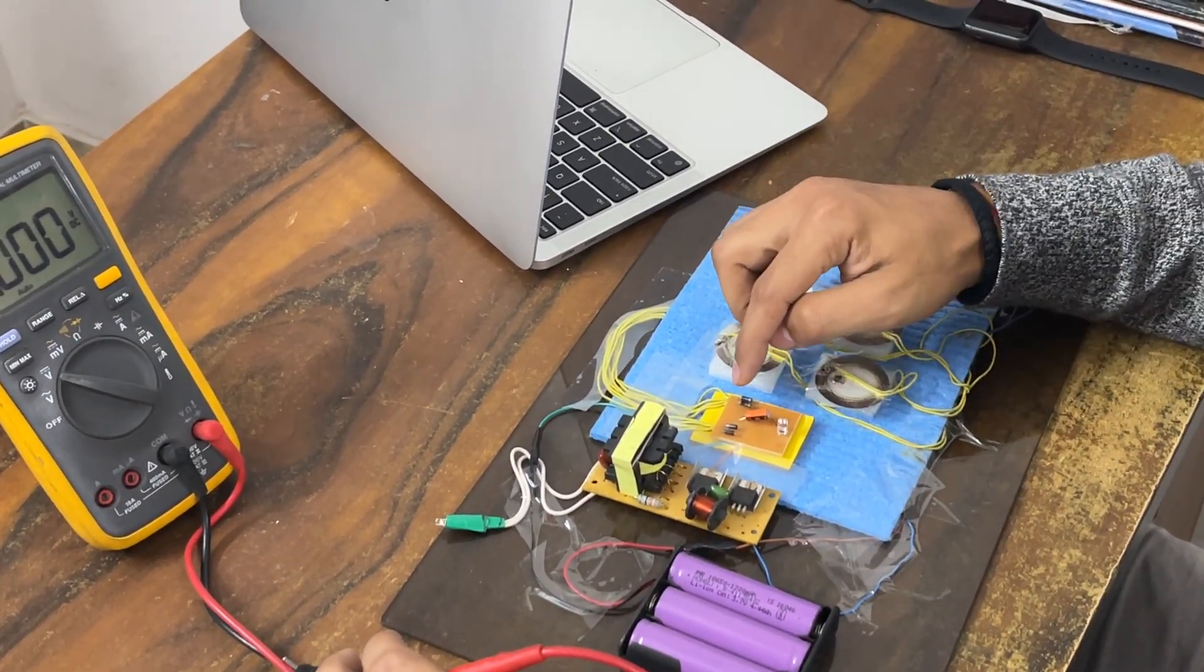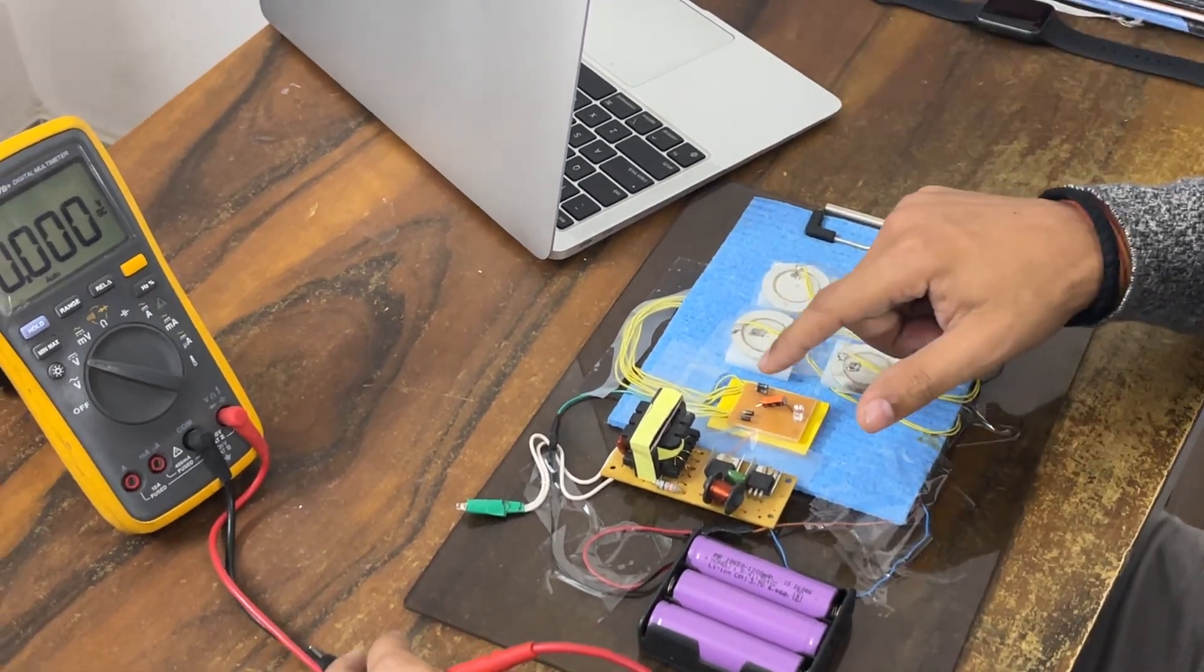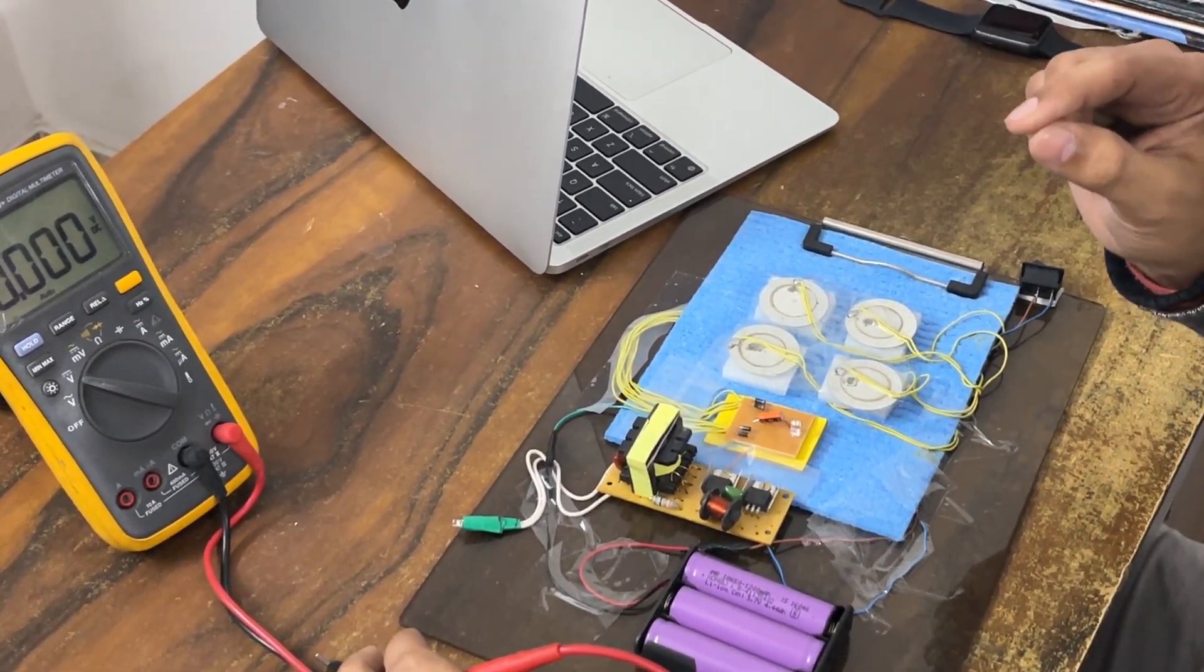Once it will generate the energy, it will convert into DC. These four diodes are working as a rectifier that will convert into DC.